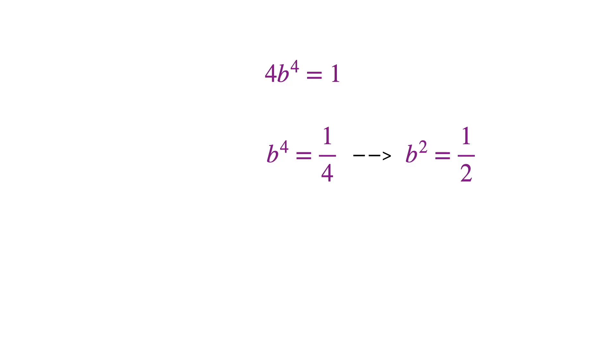Now we can take the square root of both sides which would give us b squared as plus or minus a half. But we don't want b to be an imaginary number, so we'll just take the positive answer. So b squared has to be a half if b is going to be a real number. That gives that b is plus or minus 1 over the square root of 2. So we have two possibilities for b.